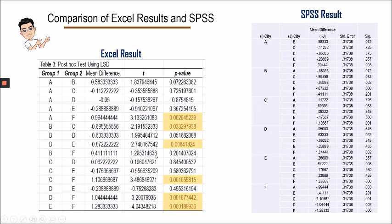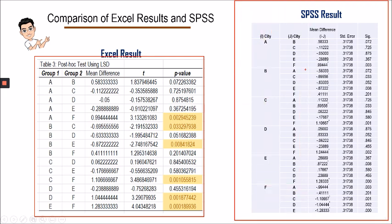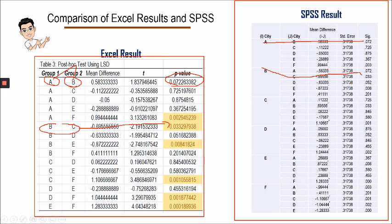To compare our post hoc result using LSD in Microsoft Excel to results from a recommended research software, they are actually the same. For example, the p-value comparing groups A and B is 0.07 in our computation and 0.07 in SPSS as well. The p-value for groups B and C is 0.03 in our computation and 0.03 in SPSS. So the integrity of our result is similar to the integrity of the SPSS result.